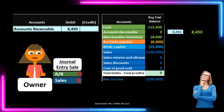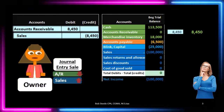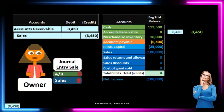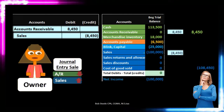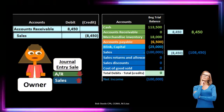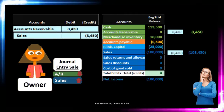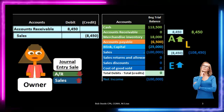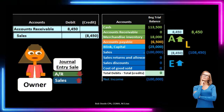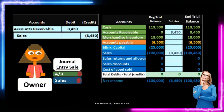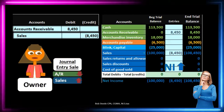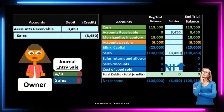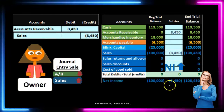The other side of the transaction is income, or sales. Income is always a credit balance account, so we make it go up with a credit of $8,450, bringing it from $100,000 up to $108,450. The effect on the accounting equation: assets have increased, liabilities remain the same, and equity has increased. On the income statement, income has gone up by $8,450 to $108,450.